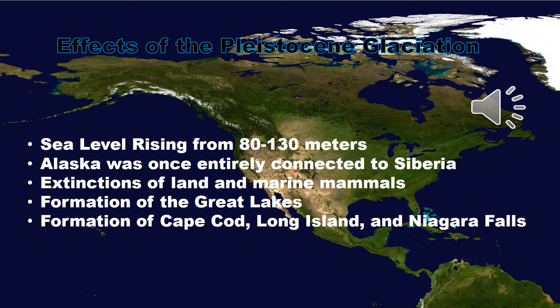The effects of the Pleistocene glaciation include sea level rising from 80 to 130 meters. As a result of this sharp rise in sea level, large continental shelves of the United States and North America are now underwater where they were once dry land.